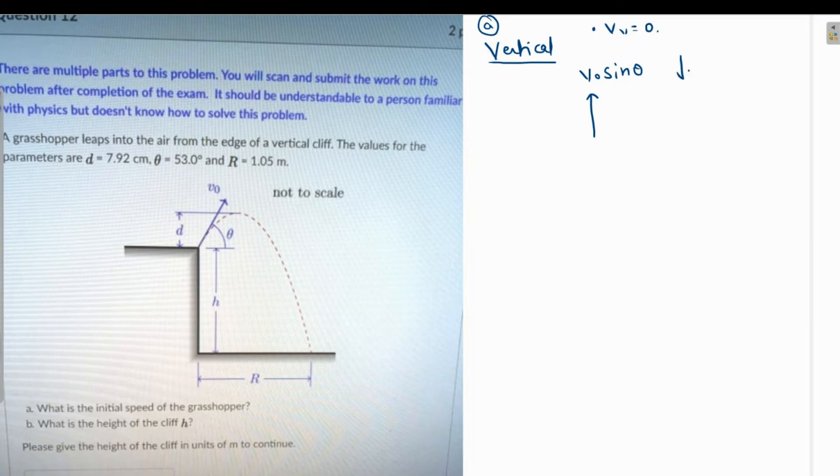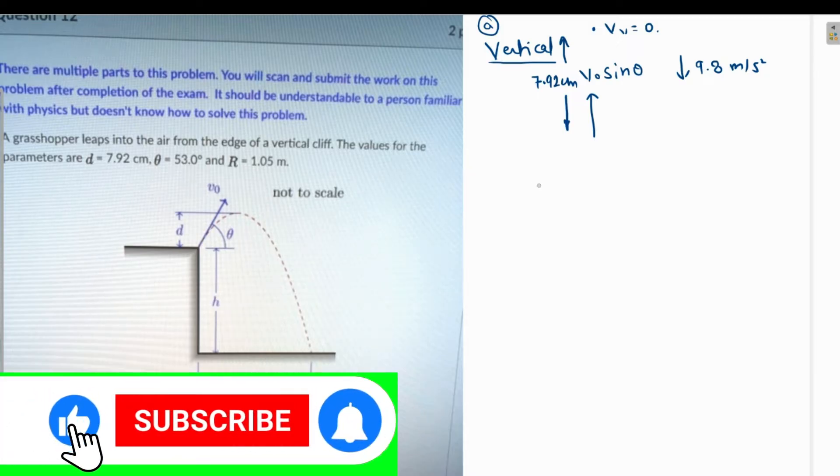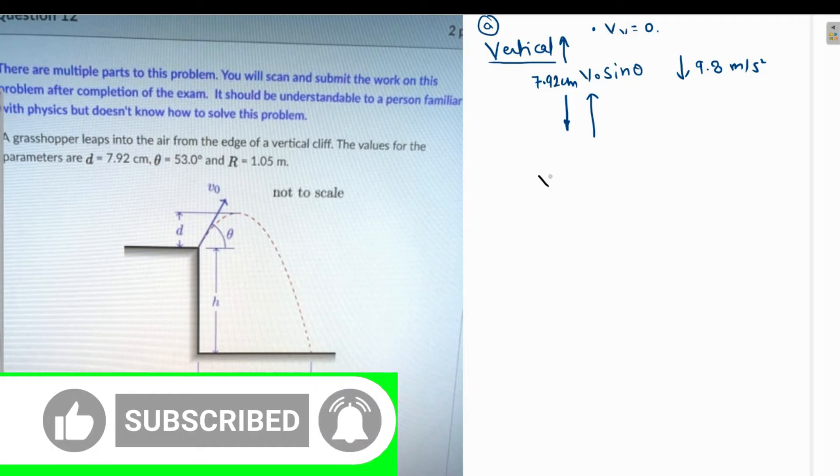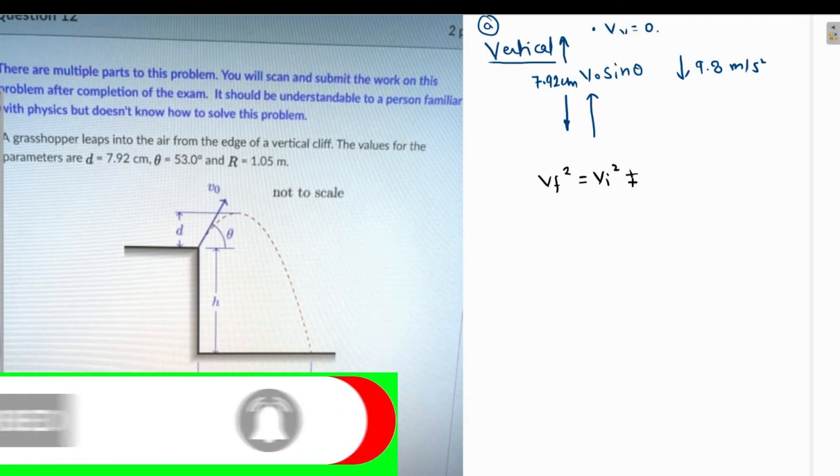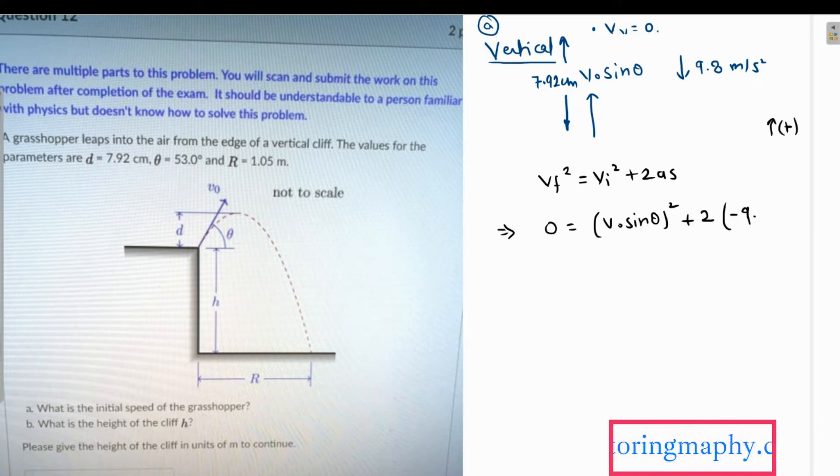Acceleration due to gravity is 9.8 meters per second squared downwards, and we know that this distance is d, which is 7.92 centimeters. We can use the third equation of motion: v final squared equals v initial squared plus 2as. Since v final is zero and v initial is v naught sine theta whole squared, and if we take the upside direction as positive, then be careful—the acceleration is to be taken as minus 9.8 because it is down, and displacement is 7.92 divided by 100 to convert to meters.